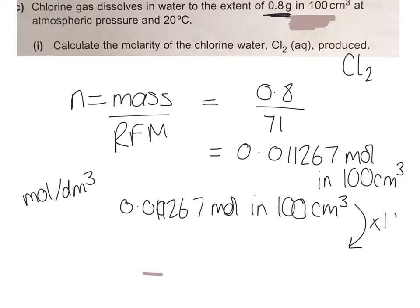Then it's going to be times 10 to get the number of moles in one decimeter cubed. So times by 10 gives us 0.113. So 0.113 moles will dissolve in one decimeter cubed.